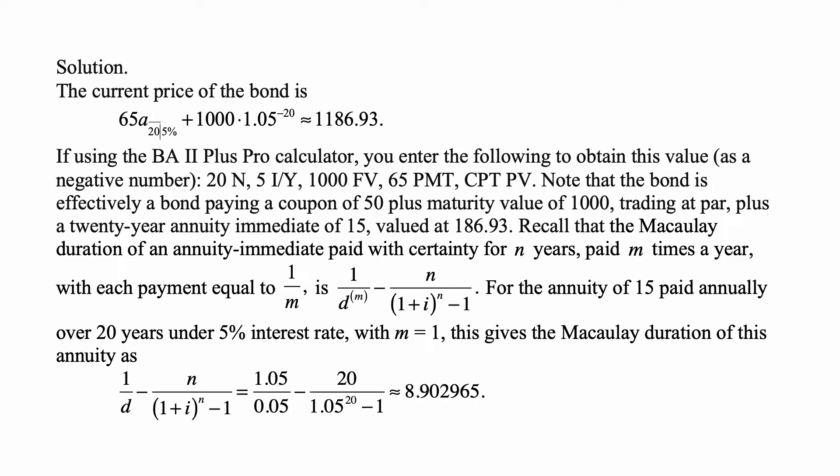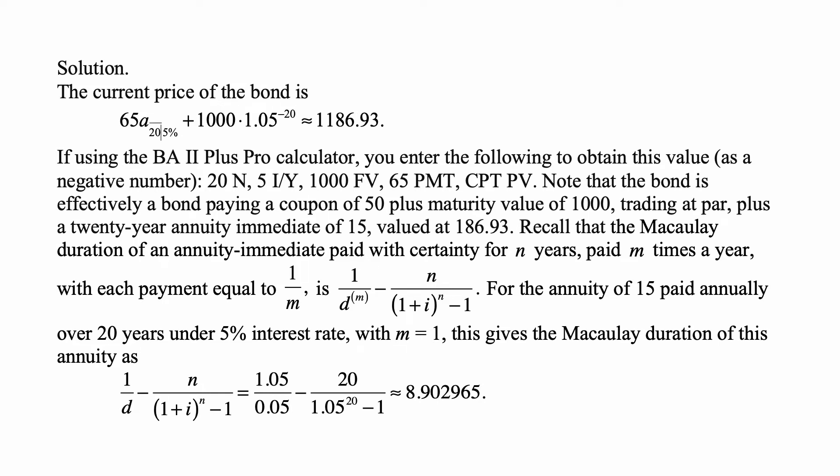Recall that the Macaulay duration of an annuity immediate paying with certainty for n years paid m times a year, with each payment equal to 1/m, is 1/d^(m) - n/((1+i)^n - 1). There's a proof of that in my study manual. You should know this formula for the test. For the annuity of 15 paid annually over 20 years under 5% interest rate, with m = 1, this gives the Macaulay duration of this annuity as 1/d - 20/((1.05)^20 - 1), which equals 1.05/0.05 - 20/(1.05^20 - 1), approximately 8.902965.